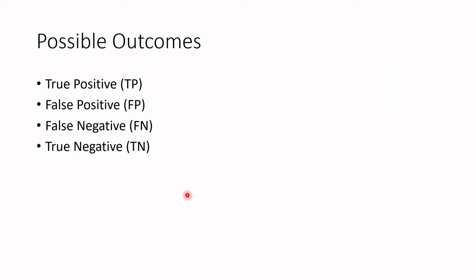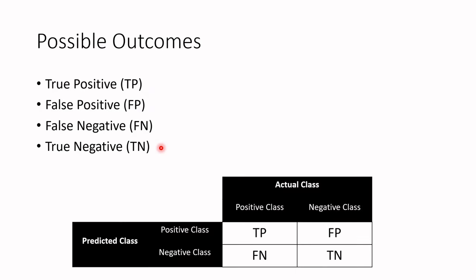Those four groups are: true positive, false positive, false negative, and true negative. To understand these definitions better, let's use this table below, which is also referred to as a confusion matrix.